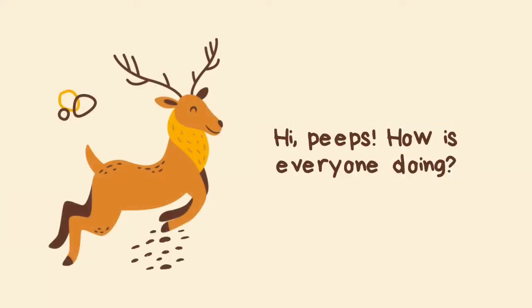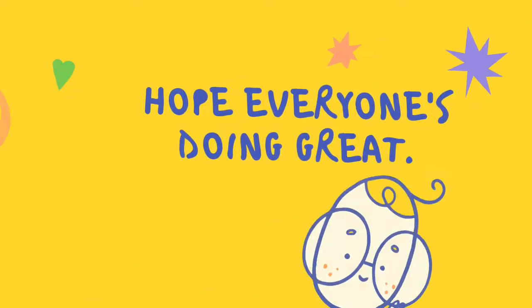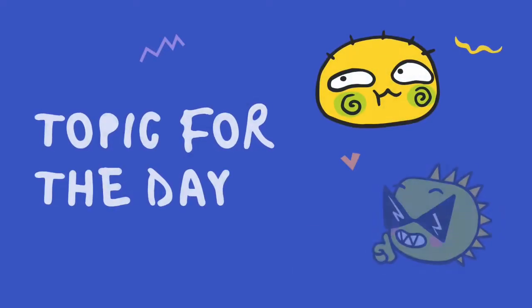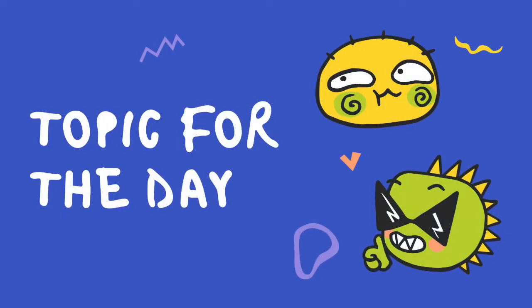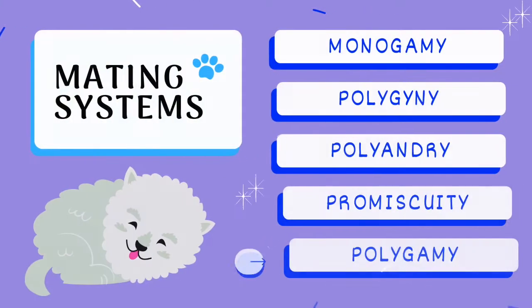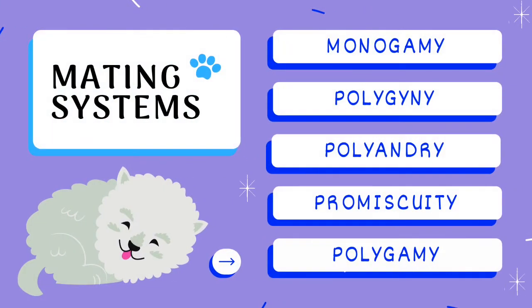Hi peeps, how is everyone doing during RDL? Hope everyone's doing great. Our topic for today is mating systems, which includes monogamy, polygyny, polyandry, promiscuity, and polygamy. However, I will only discuss about polygyny and polyandry.